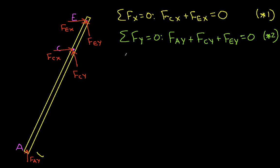And then let's do the sum of the moments about C is equal to zero. I chose C because that will get rid of FCX and FCY won't show up in this equation because they point at C. It'll give us something that relates FEX and FEY because we know FAY.